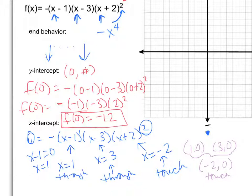So first of all I have the point 1, 0, then we have the point 3, 0, so 1, 2, 3, and we have the point negative 2, and I know it's going to touch.